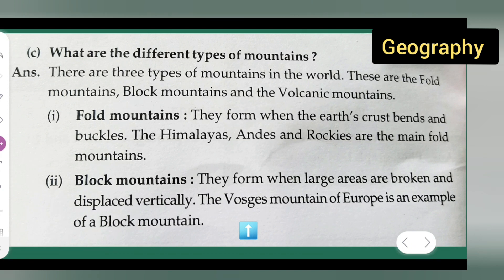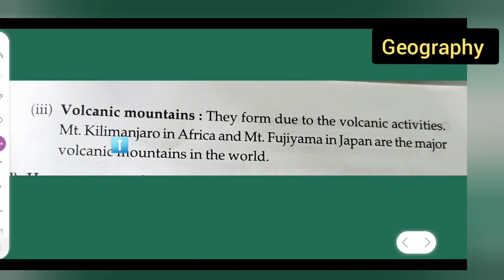Next, let us see the volcanic mountain. They form due to volcanic activities. Mount Kilimanjaro in Africa and Mount Fujiyama in Japan are the major volcanic mountains in the world.